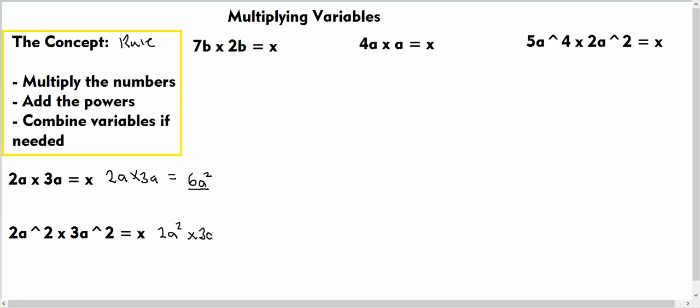And we're going to apply the same rule here. We're going to firstly multiply the numbers: 2 multiplied by 3, we know that this is equal to 6. And if we add the powers, we have 2 here plus 2 here, and we know 2 plus 2 is equal to 4. So the answer will be 6a to the power of 4. Okay?